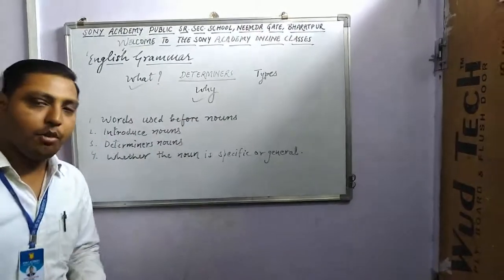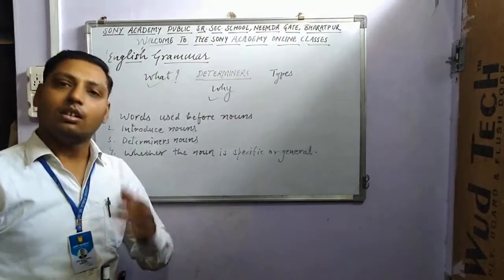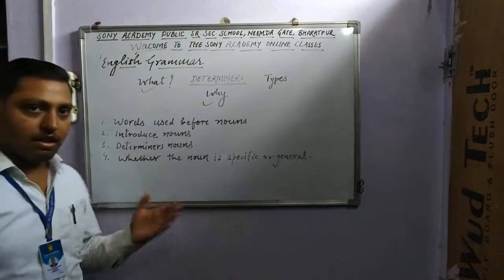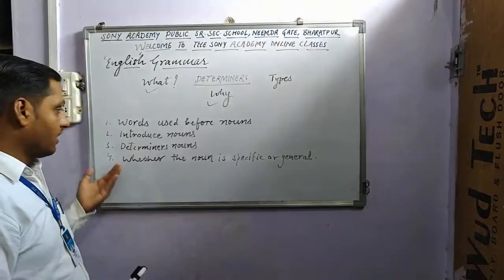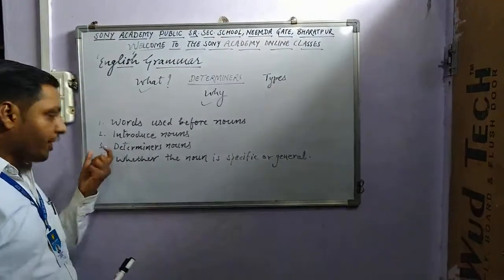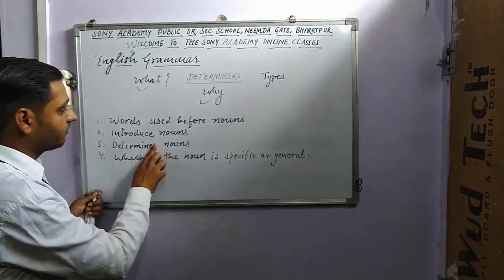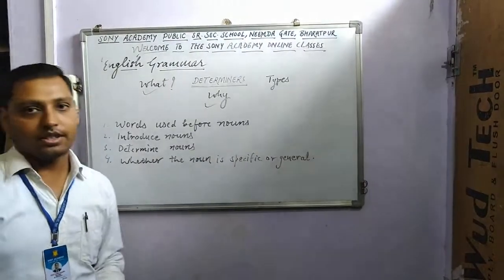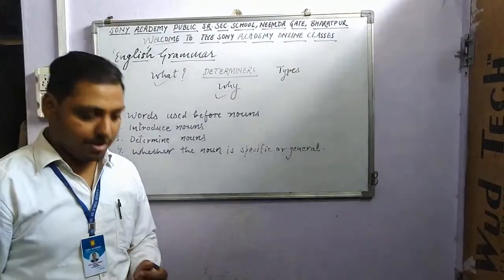To summarize, these are the four key points: determiners are words used before nouns; they introduce nouns; they determine nouns — meaning whether the noun is specific or general. These are the key points, and I hope you have understood them.